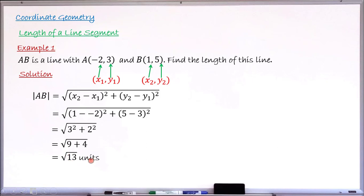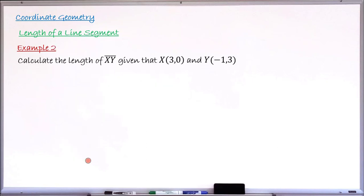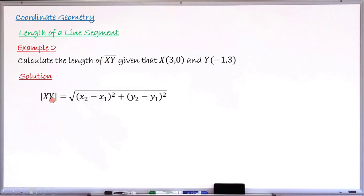Example number two: calculate the length of line segment XY, given that the coordinate of X is (3, 0) and the coordinate of Y is (−1, 3). For the solution, we write down the formula. Since our line segment is XY, we write: length of XY = √[(x₂ − x₁)² + (y₂ − y₁)²], with both brackets inside the square root.